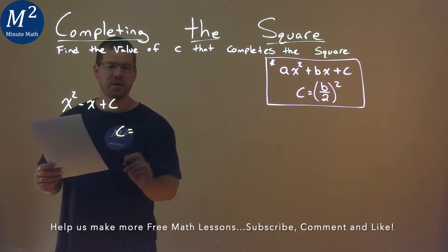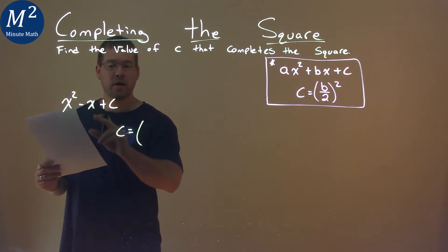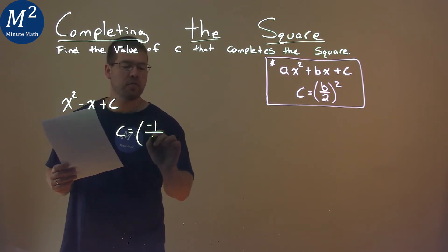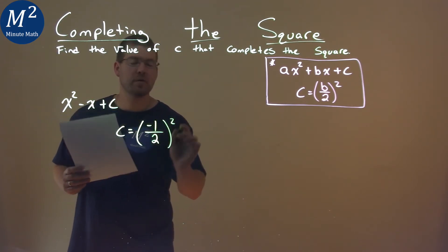Well, our formula is c is equal to our b value, which is the coefficient in front of x here, which is a negative 1, divided by 2, all squared.